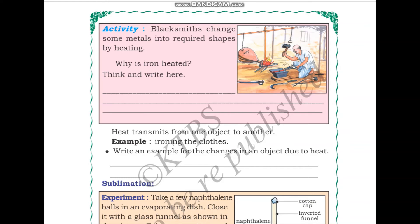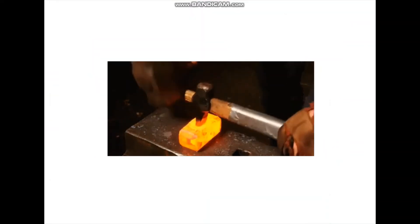Another activity: blacksmiths change some metal into required shapes by heating. Why is iron heated? You can see in the picture that the metal is heated until it becomes red hot. Iron and other metals become soft on heating. This allows blacksmiths to mold the metal into the required shapes — they can easily hammer it to create the required shape.